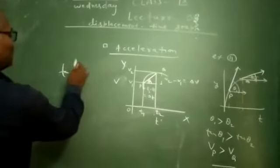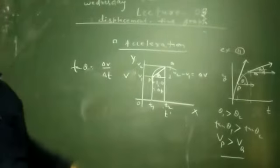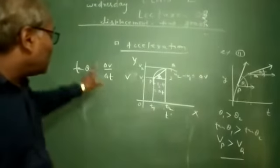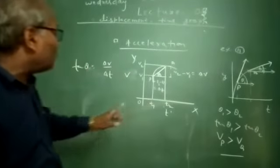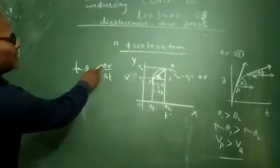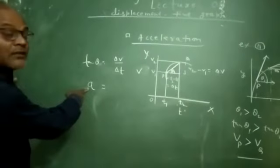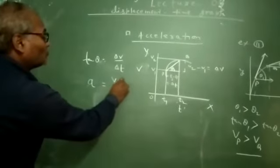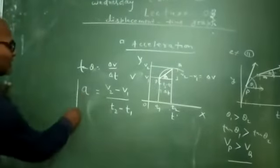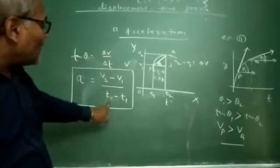Tan theta equals delta V upon delta T — the rate of change of velocity — which, according to the definition of acceleration, gives us acceleration in the velocity-time graph. Acceleration is symbolically denoted by the small letter 'a', and is given by: a = (V2 − V1) / (T2 − T1). So acceleration can be expressed according to this formula.